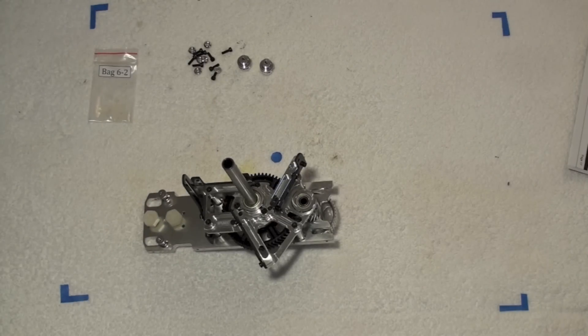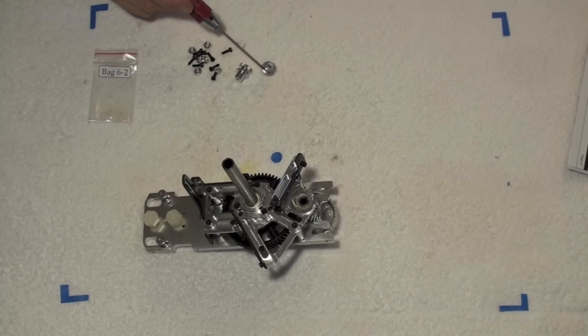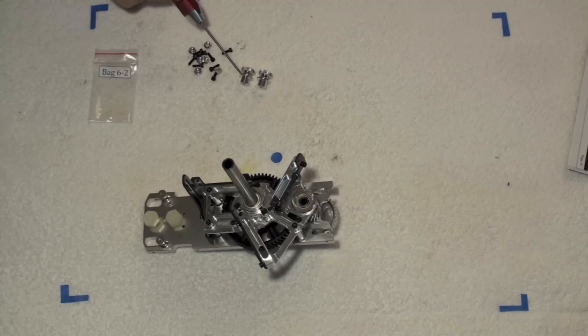So now to mount the transmission assembly to our frames, we're going to need the canopy standoffs out of what the manual says, tray 1, but mine were actually in tray 2. These guys here. Okay, so that might be a typo in the manual, or they move things around, I'm not sure. Like I said, you'll actually find these in tray 2 in my kit. We also need bag 6-2, which is going to have our mounting hardware.